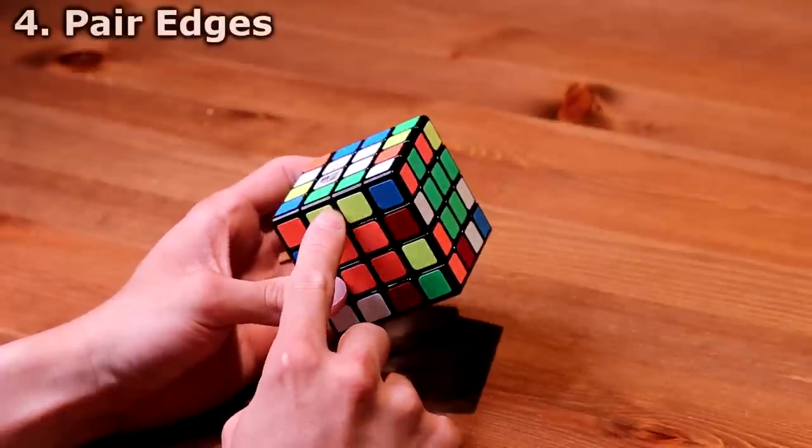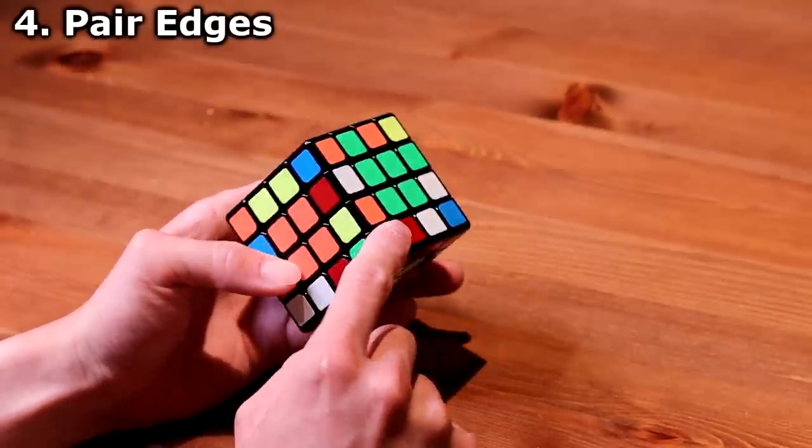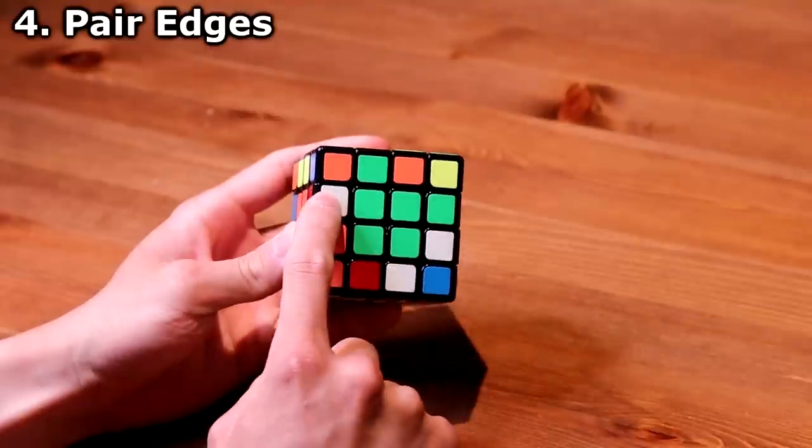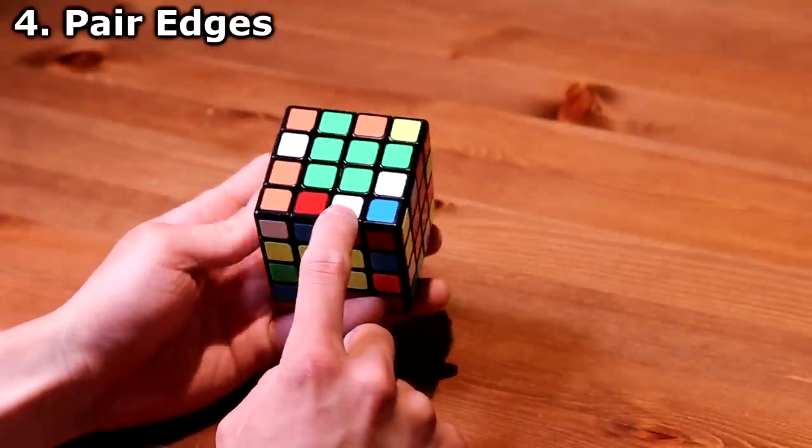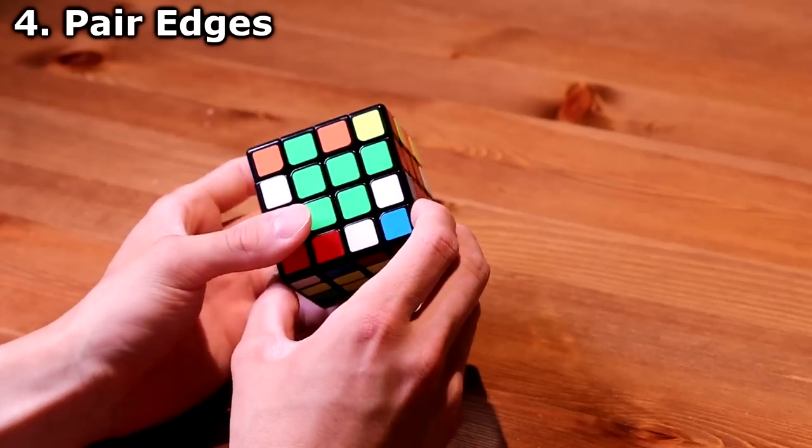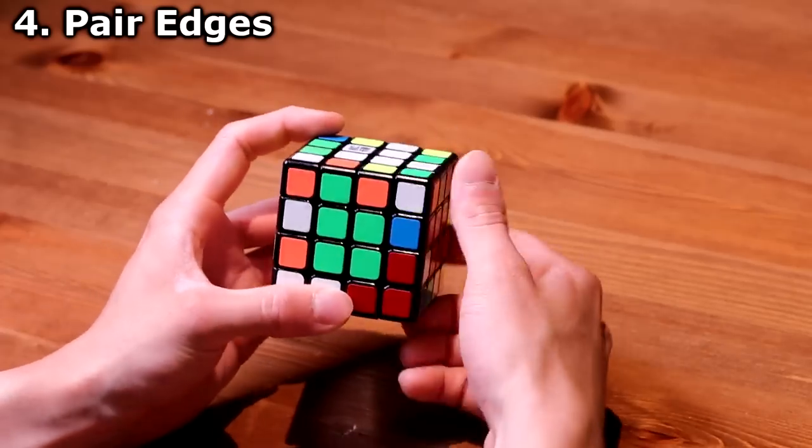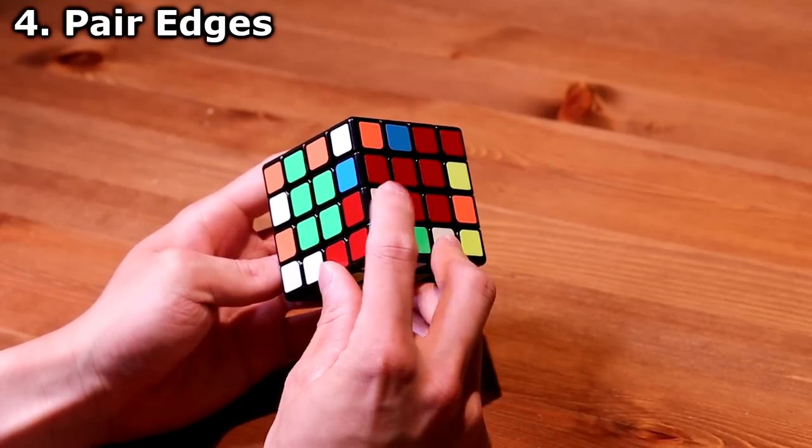The next step is to make these edges. Red, so I see this red and white piece, and one right here, one right here. I want to move this to the same layer, like that. So it's directly across from each other, horizontally.